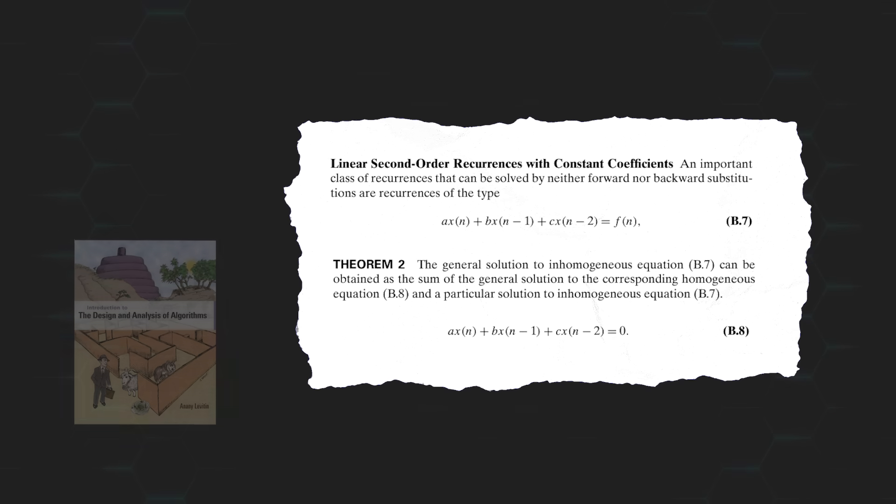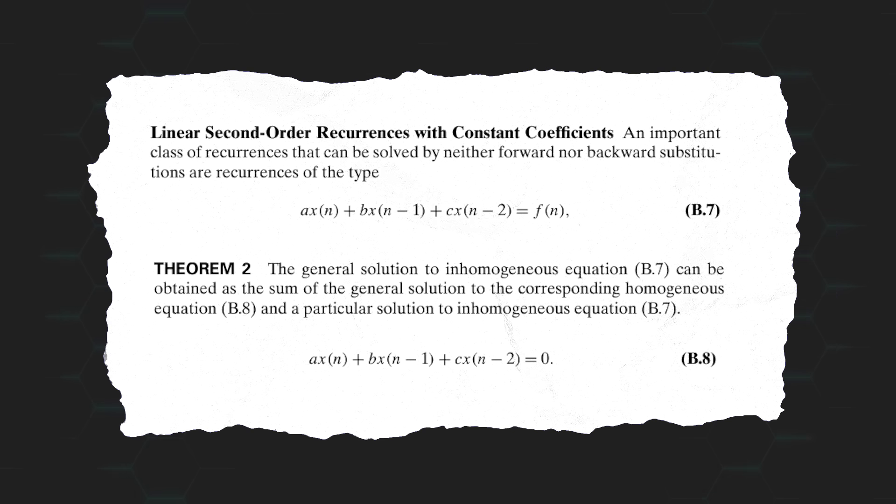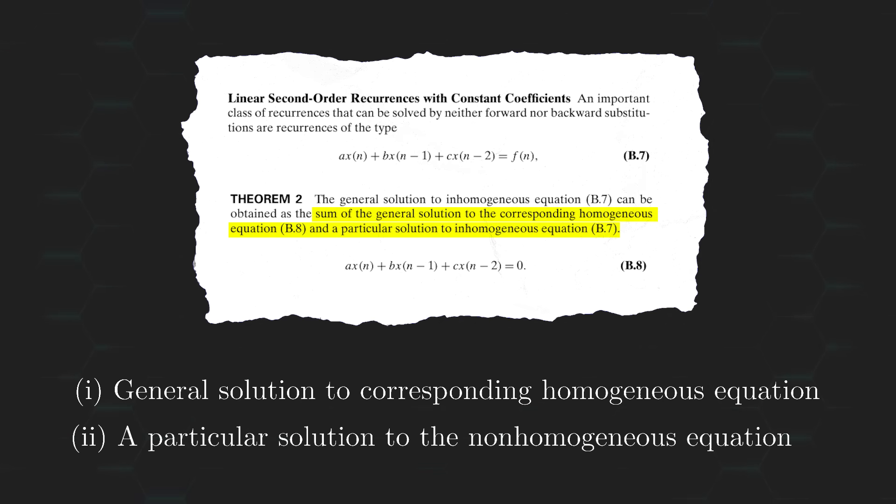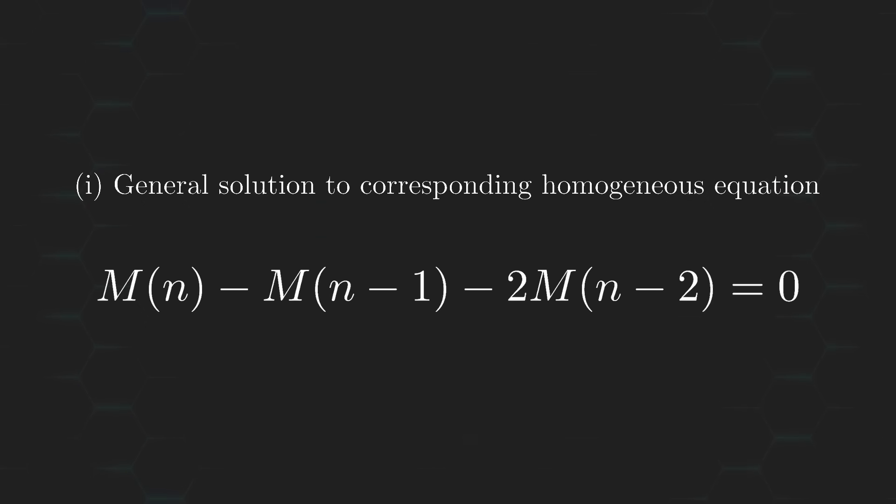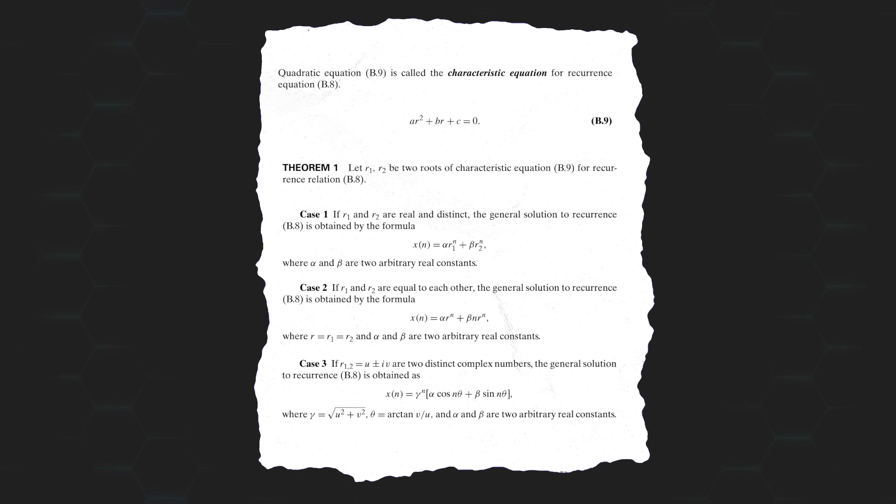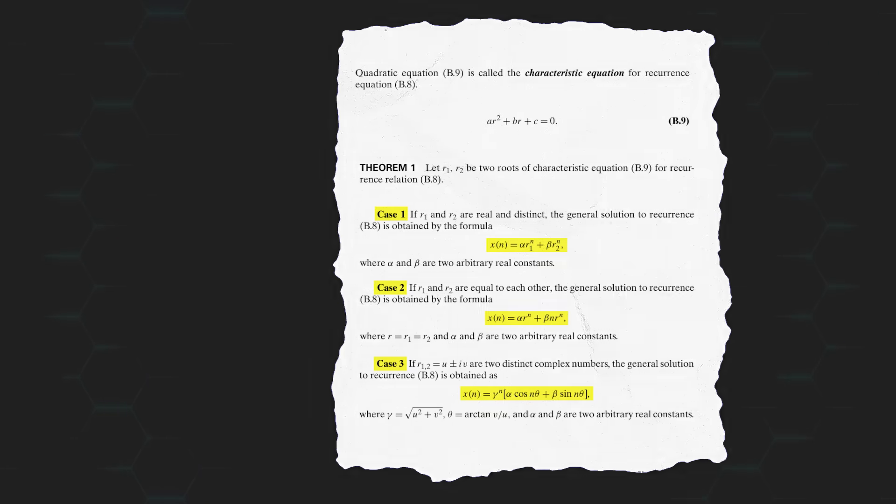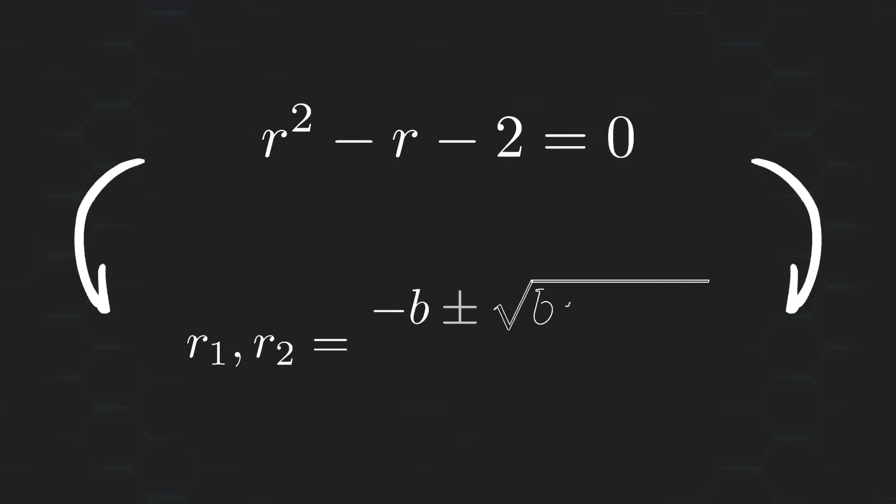Let's take a look at this theorem, which was pulled from the book Introduction to the Design and Analysis of Algorithms by Anani Levitin, which states that the closed-form solution to a recurrence relation can be acquired by adding together the general solution to the corresponding homogeneous equation and a particular solution to the non-homogeneous equation. Let's try to find the general solution to the homogeneous equation first, which is just the original equation, but setting it equal to zero. To solve this, we use another theorem from the same book, which asks us to first consider the roots of the characteristic equation for the recurrence relation. And then, depending on what case the roots fall under, a formula for the general solution is provided.